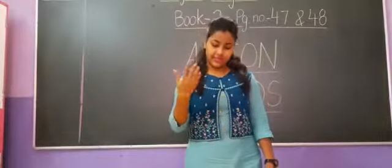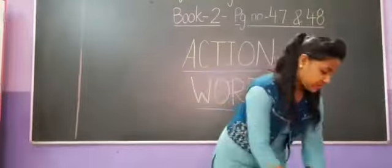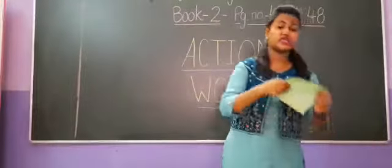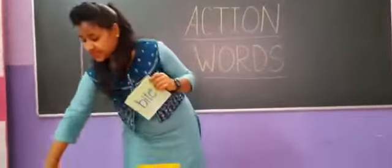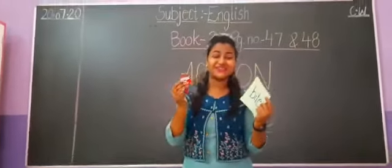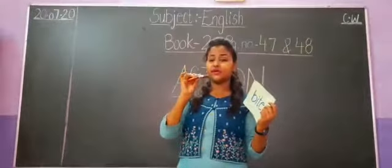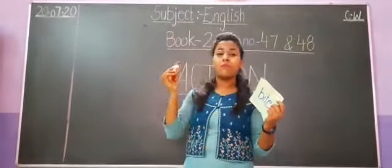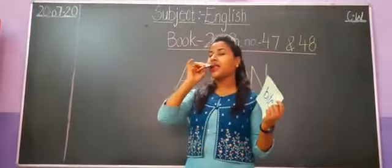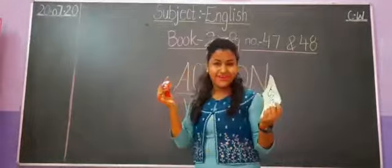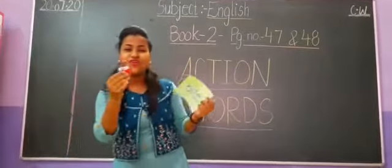Now the next action word is bite. See, right now I am having chocolate. Do you like chocolate? So what am I doing? I am going to bite. What am I going to do? Bite. Do you want it?